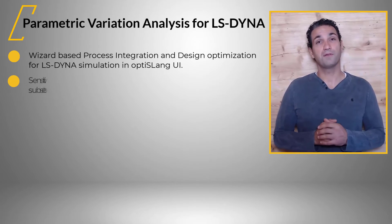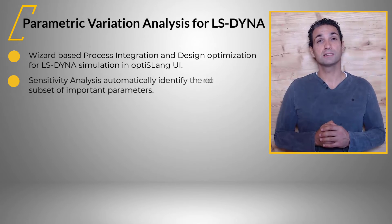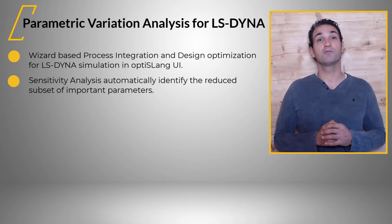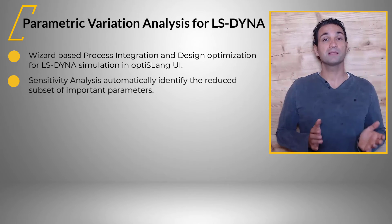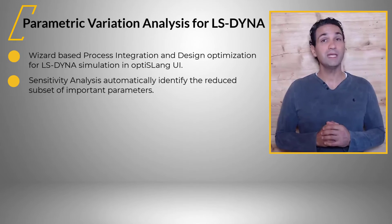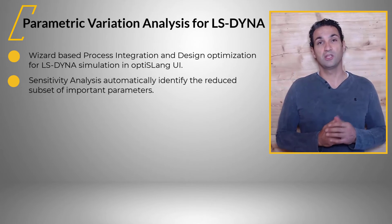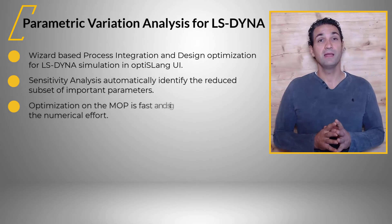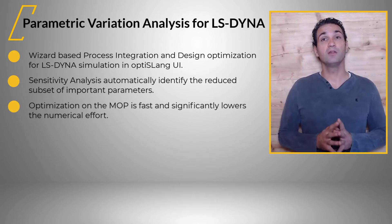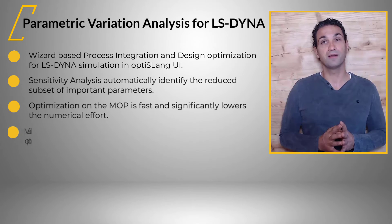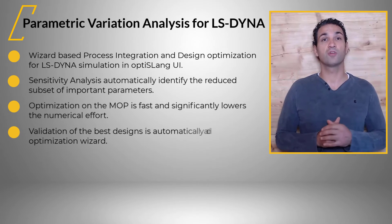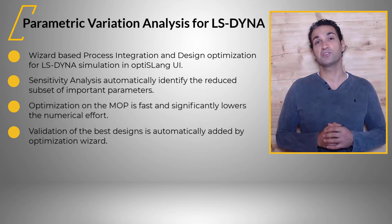You quantify the parameter influences and automatically identify the reduced subset of important parameters. Based on the MOP created in that process, a subsequent optimization could be performed. The optimization on the MOP is fast and significantly lowers the numerical effort. The validation of the best designs is automatically added by the optimization wizard.